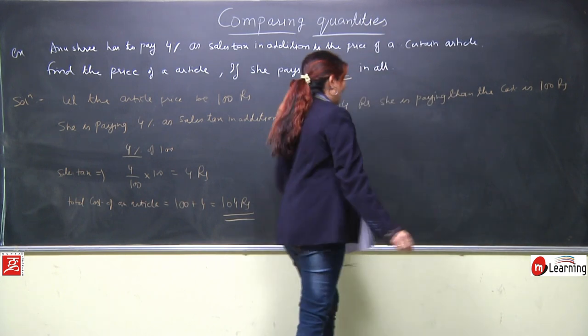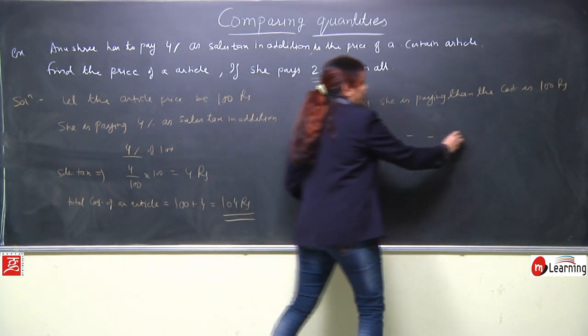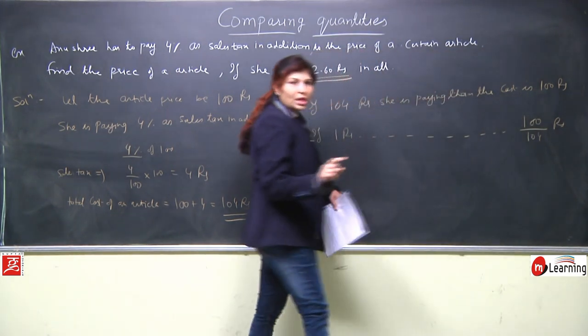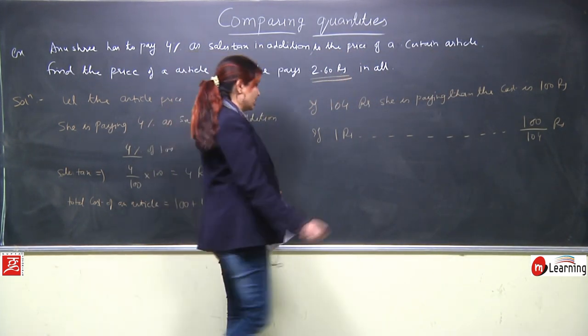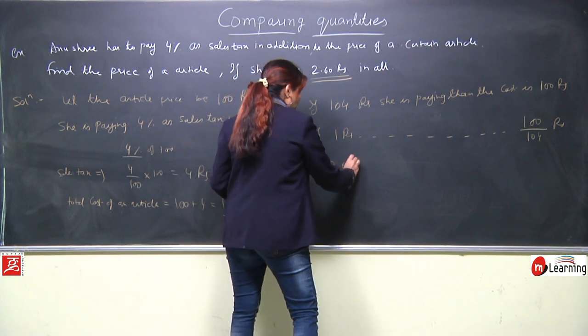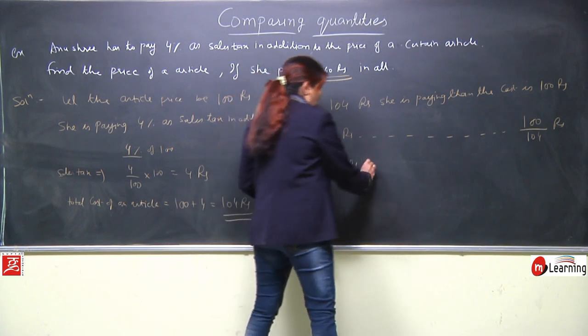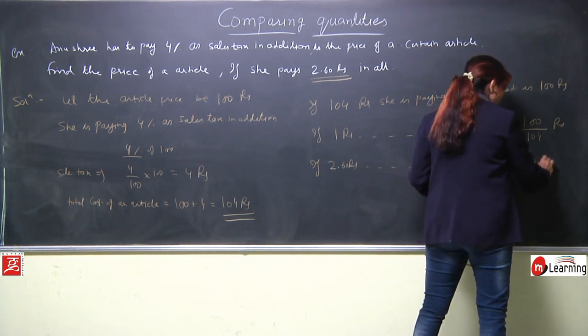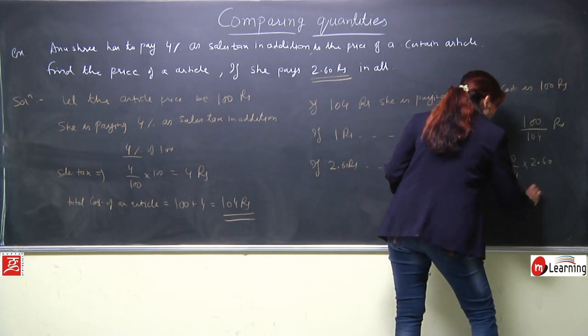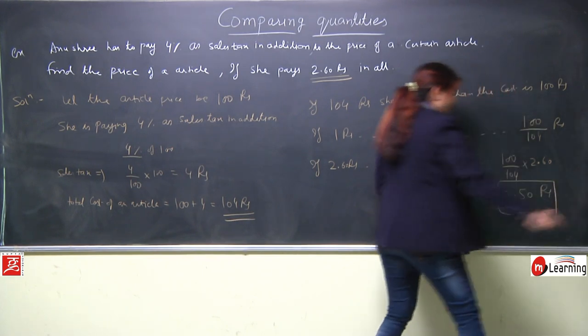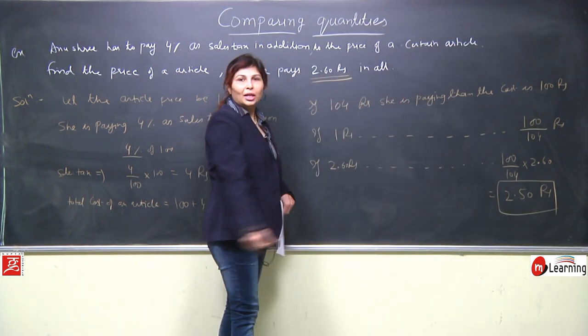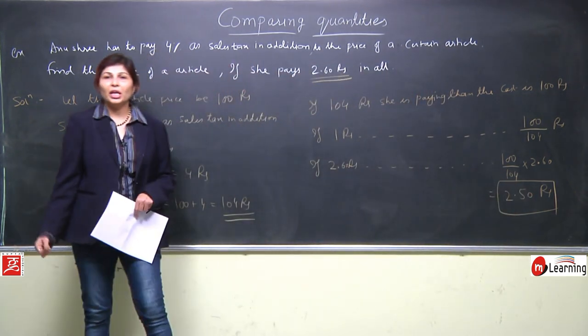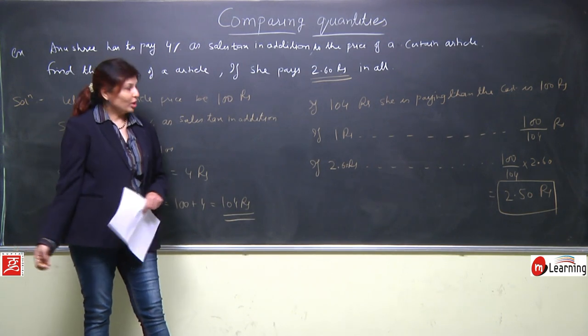If 104 rupees she is paying, then the cost is 100 rupees which we assumed. If suppose 1 rupee she is paying, then the cost is 100 upon 104 rupees. Unitary method is the easiest method if you understand the concept once. If she is paying 2.60 rupees, then cost of article should be - we just solved this - she is paying 2.50 rupees. Means 10 paisa she is paying extra in addition as sales tax.